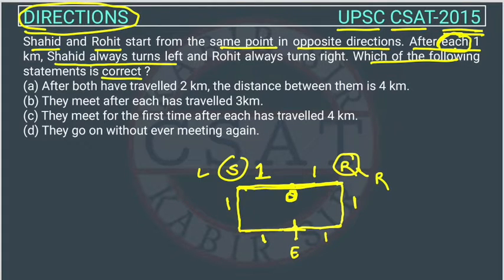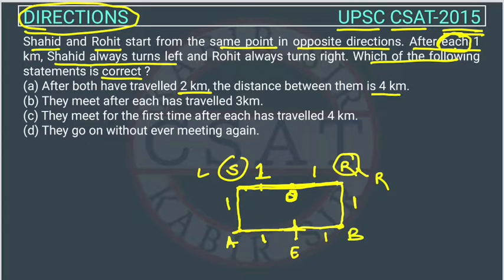The first statement says the distance between them is four kilometers after both have traveled two kilometers. Shahid traveled one kilometer here and reached a total of two kilometers, and Rohid also covered two kilometers reaching point B. So the distance between A and B is two kilometers — this statement is wrong.